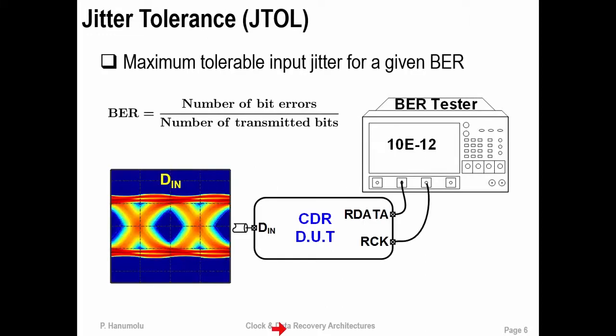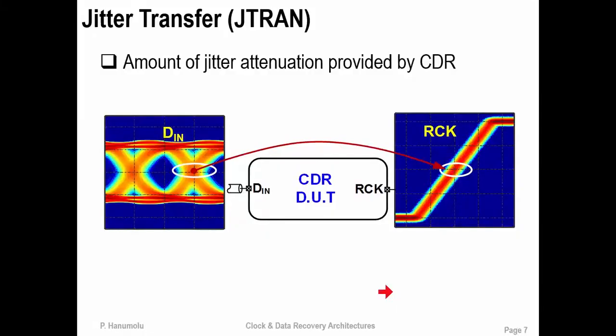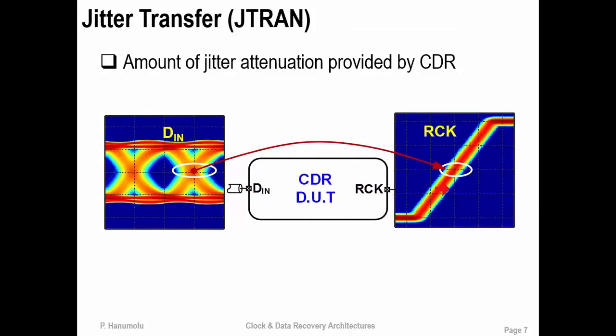Jitter tolerance is a very, very important — perhaps the most important — performance metric in either electrical or optical links. It quantifies the CDR's ability to recover noisy data without making any errors. In practice, there is a certain BER threshold; in this example, the threshold is 10 to the power of minus 12. So the CDR's tolerance to input jitter while recovering data with BER less than 10 to the minus 12 is referred to as jitter tolerance. On the other hand, jitter transfer indicates how much of the input jitter is transferred to the recovered clock. In some applications, such as the optical repeater, this is important, whereas in electrical links this performance metric may not be as critical.